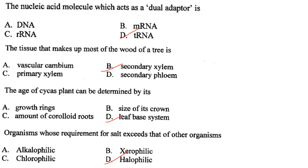The tissue that makes up most of the wood of a tree is secondary xylem — answer is option B. The age of a Cycas plant can be determined by its leaf-base scars — answer is option D.